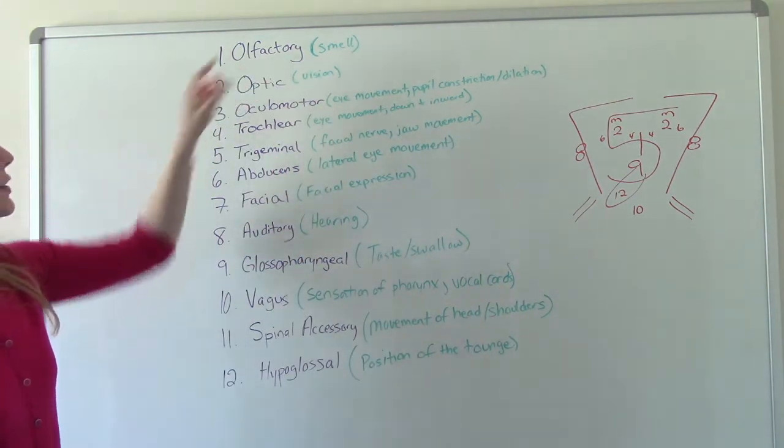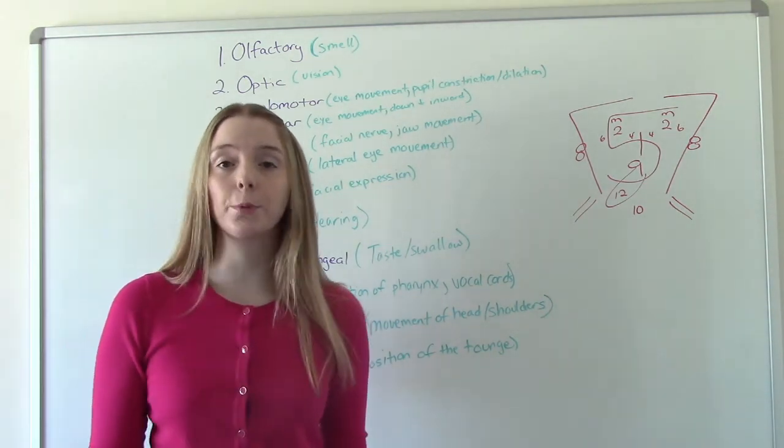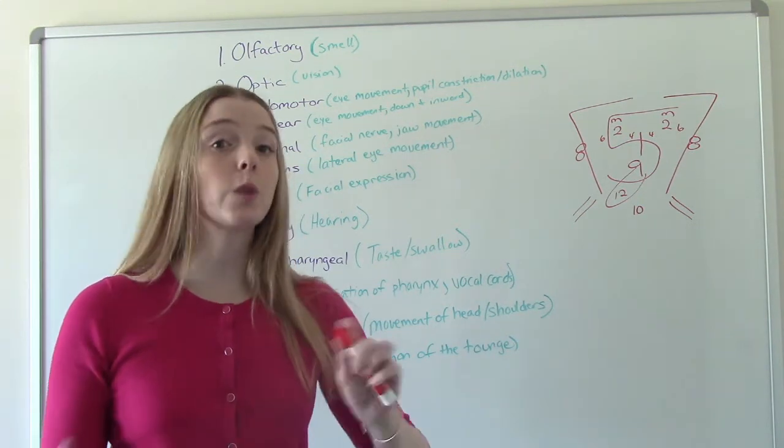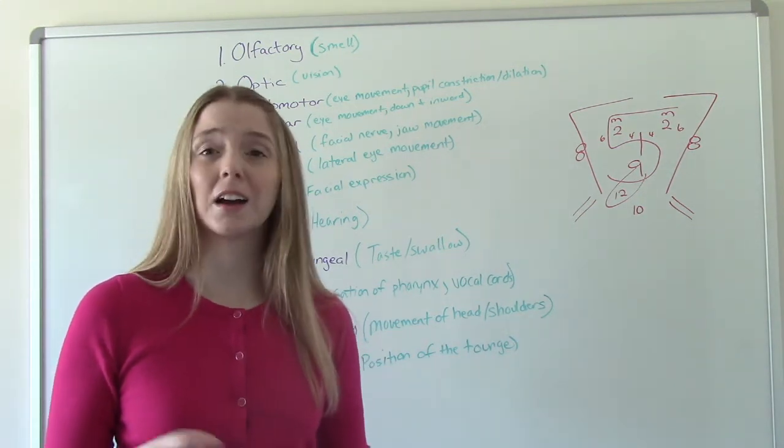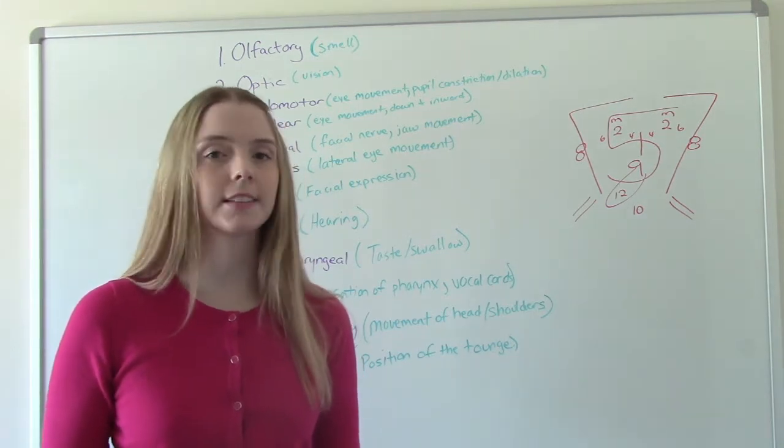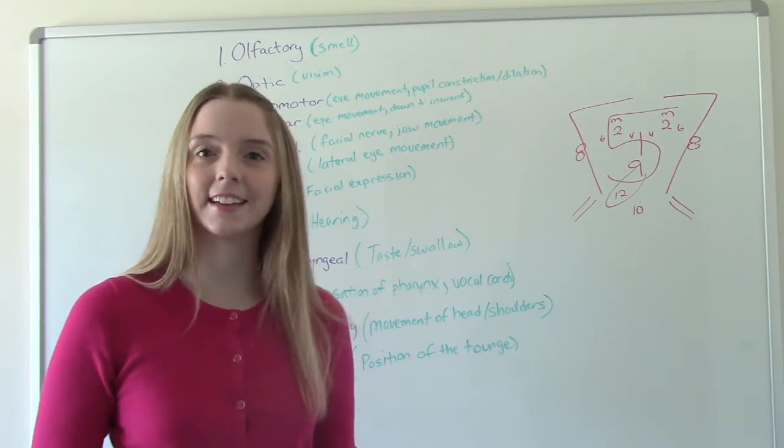The first one is the olfactory nerve. This is your sense of smell. And this is actually a pretty easy one to test. If you're testing somebody's sense of smell, just grab something you have nearby, like a cup of coffee or even an alcohol wipe from your pocket and ask them, can you smell this smell? And if they say yes, then that sense is intact.